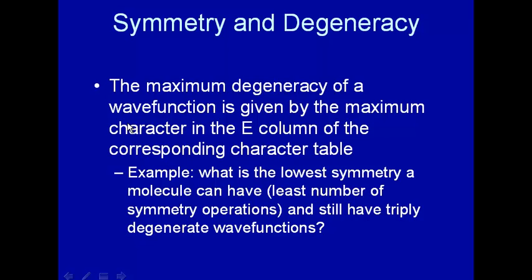And if we look down the E column, the identity column of the character table, we can find out for that particular molecule corresponding to that point group what the maximum degeneracy of a wave function is for that molecule. So what do we mean here by the E column?